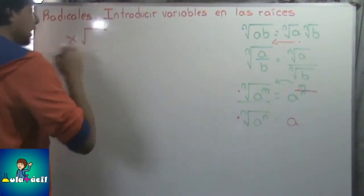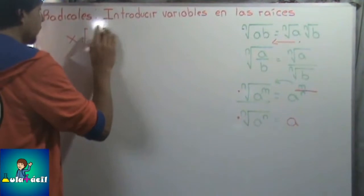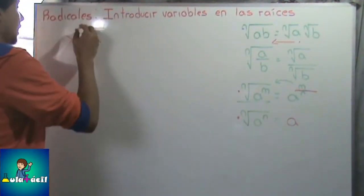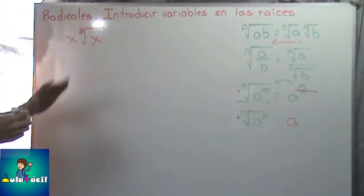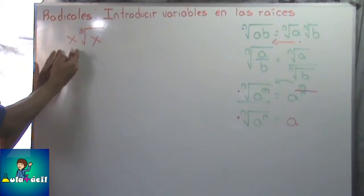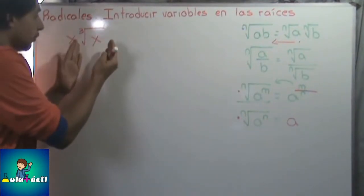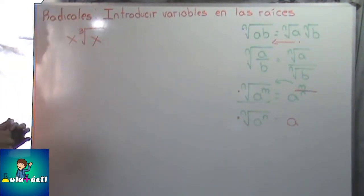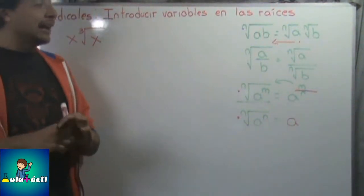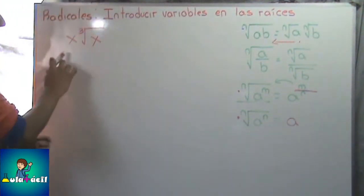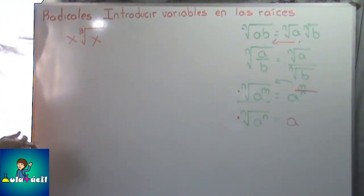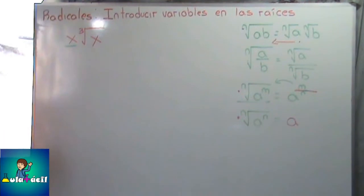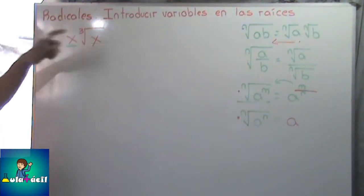La queremos introducir adentro de esta raíz. X, vamos a poner aquí 3. Entonces tenemos ahora una raíz en donde afuera tenemos una variable, y adentro tenemos otra variable. Esa variable está multiplicando a esa raíz. Cuando tengamos este tipo de operaciones, significa que el elemento de afuera va a estar multiplicando a la raíz.